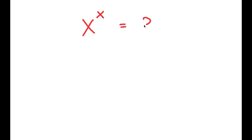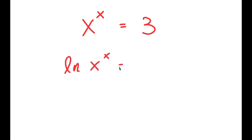In this video, I'm going to solve the equation x to the power of x is equal to 3. To solve this, I'm going to first start by taking the ln, or natural log, on both sides. So I get ln of x to the power of x is equal to ln of 3.